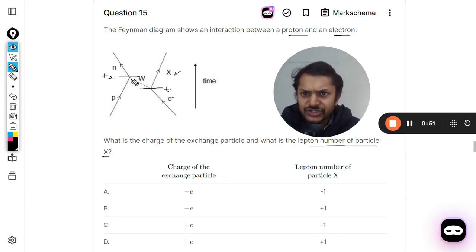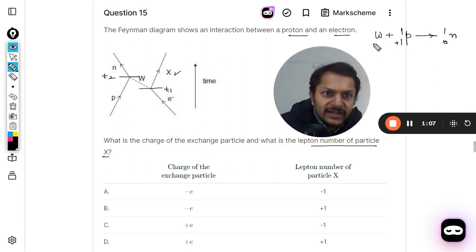We can talk about this junction at t2. So this W is coming and it gets added onto proton which is already having a charge of plus one, and it creates a neutron which is one and zero. So by the conservation of charge principle, I can clearly say that the charge on the W boson should be negative one. Otherwise the charge is not conserved.